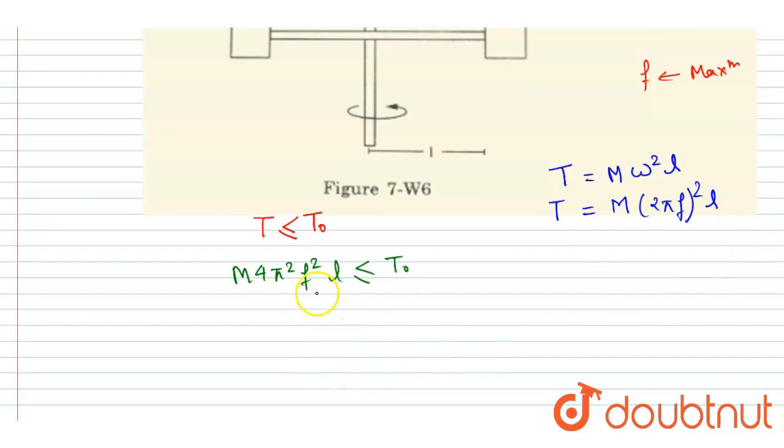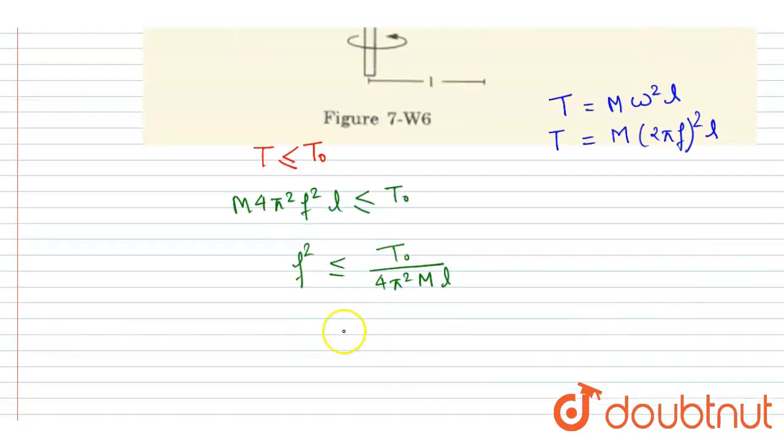So now you can find the maximum value of f. You will write f square should be less than equals to T naught by 4 pi square m into l. So after taking root you will get this as the frequency.